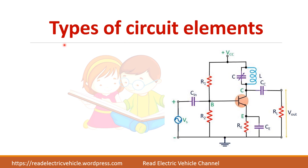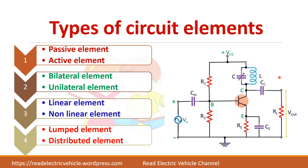Next we come to the types of circuit elements. In this circuit you can see a voltage source, resistor, capacitor, transistor, and inductor — different elements are present. These can be classified into various categories: active or passive element, unilateral or bilateral element, linear or non-linear element, and lumped or distributed element. A resistor, for example, can be passive, bilateral, and linear at the same time.